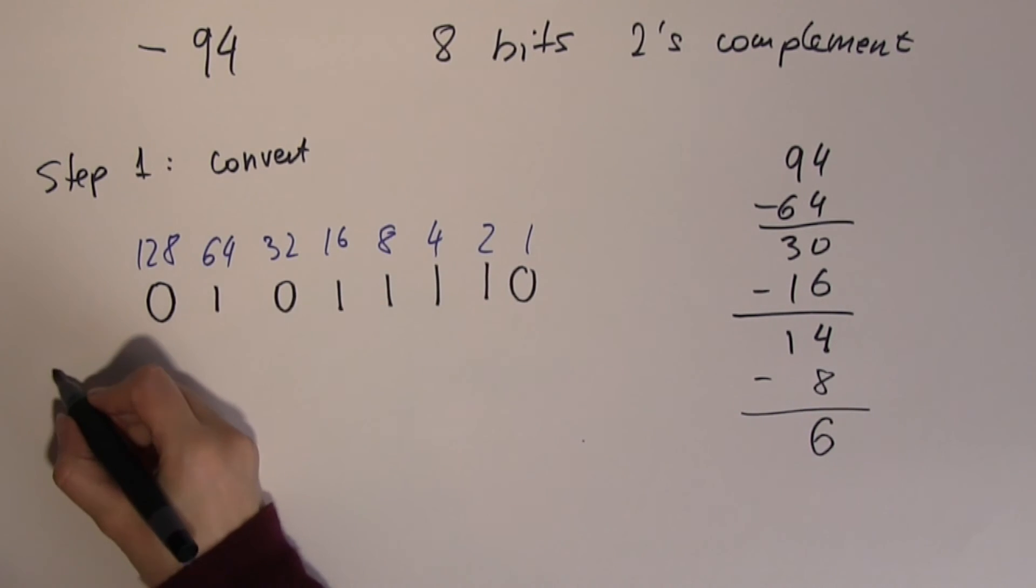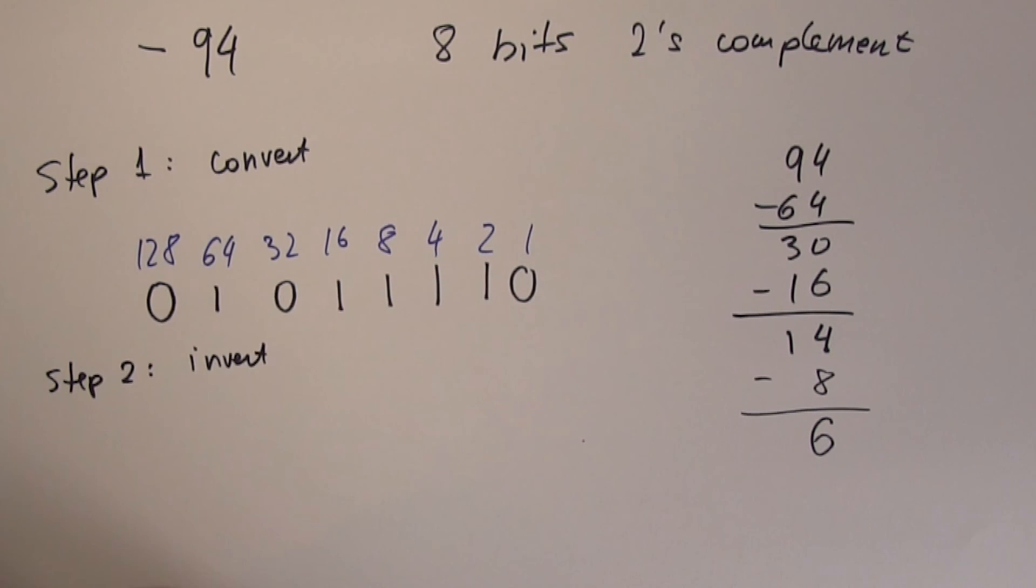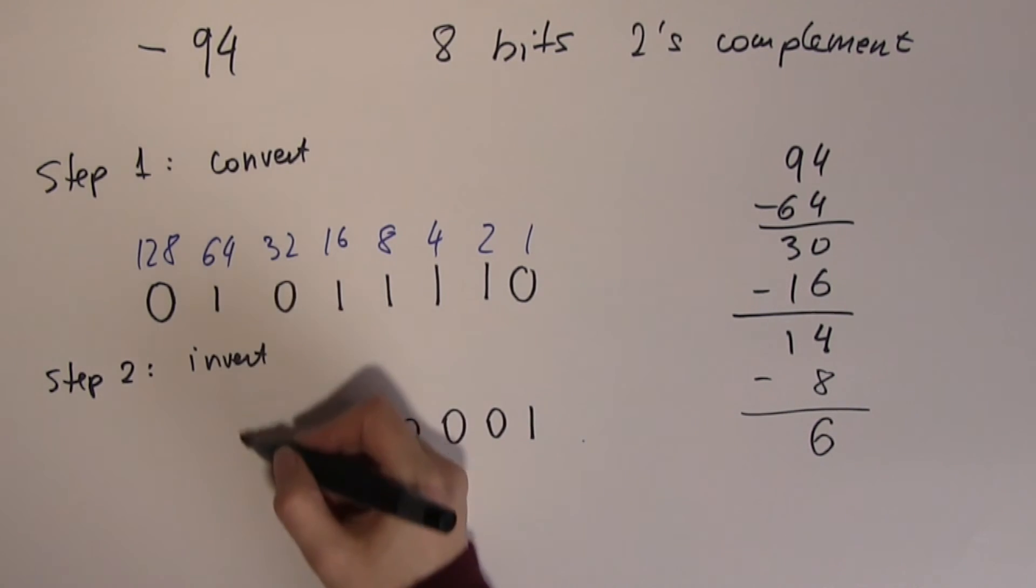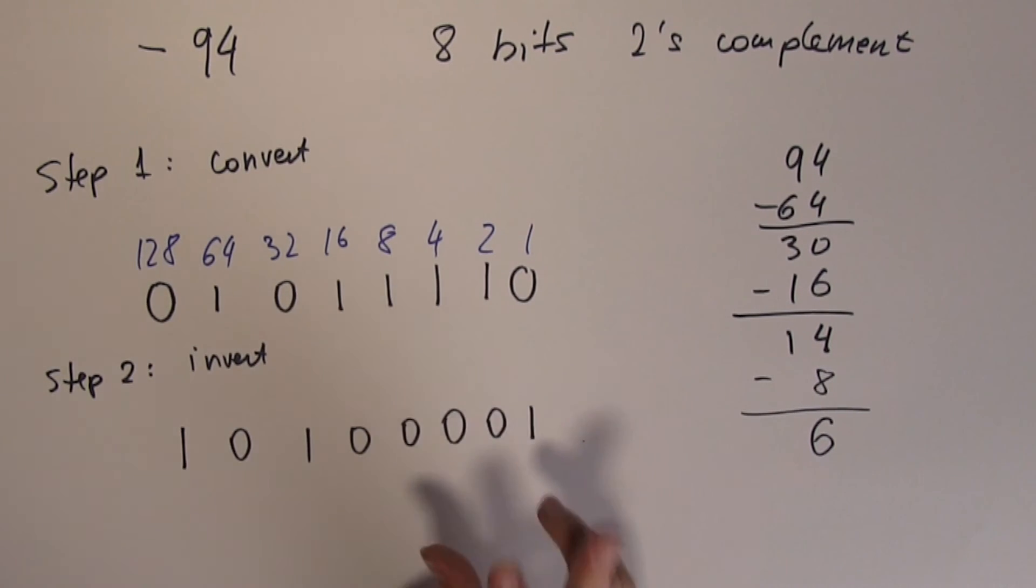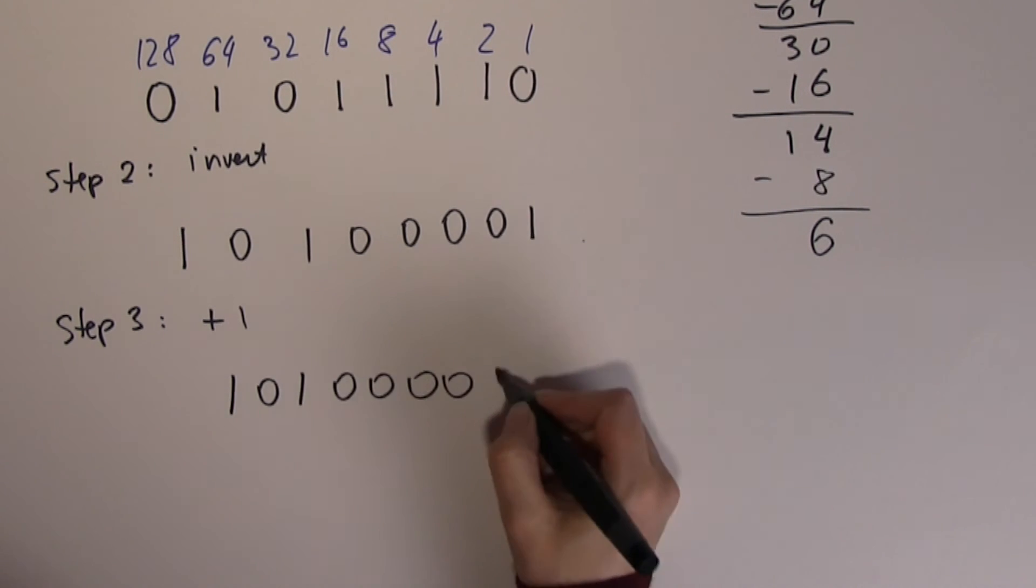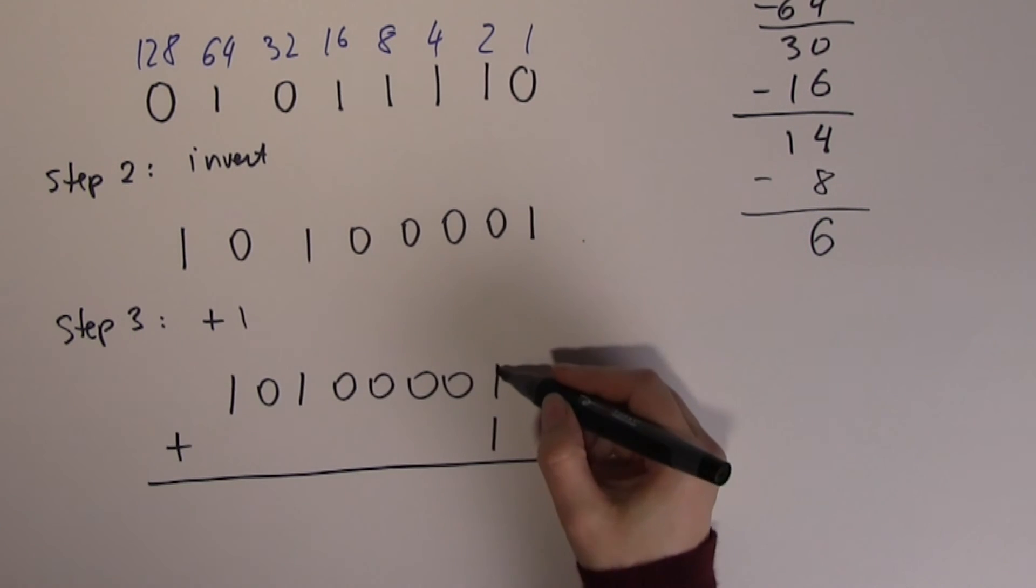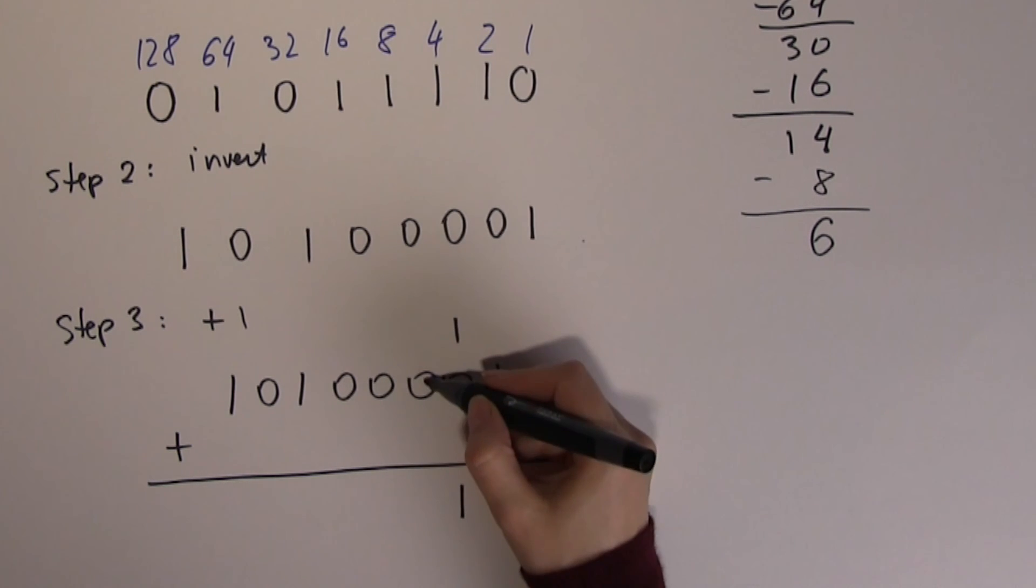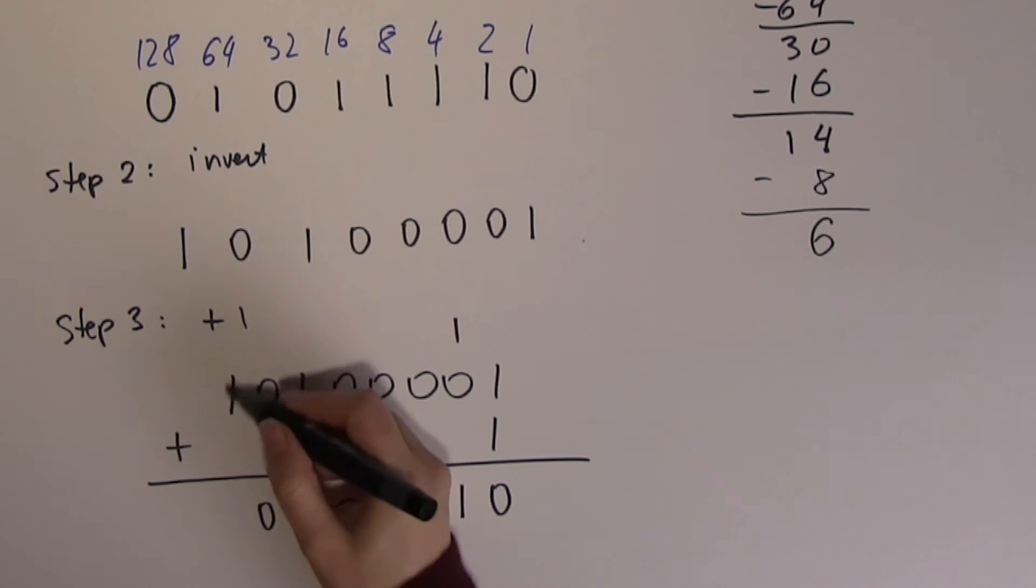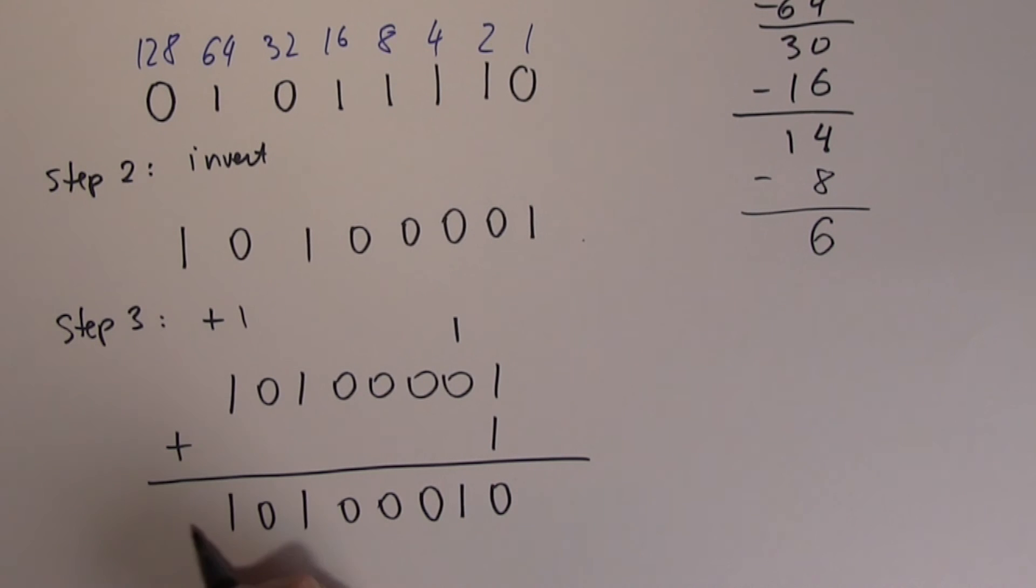Step 2 was the inversion. We need to invert every single bit to the opposite. 0 becomes 1, 1 becomes 0. This is the inverted number, but what happens now is I need to add 1. Let's just copy the number down here again and add 1 to it. 1 plus 1 is 0, carry the 1. 1 plus 0 is 1, and from here on I don't need to add anything, so I can just copy them. The 8 bits 2's binary equivalent of minus 94 is this number.